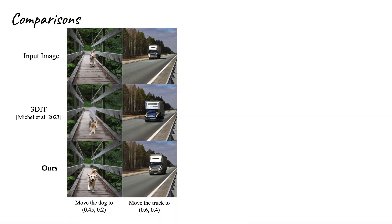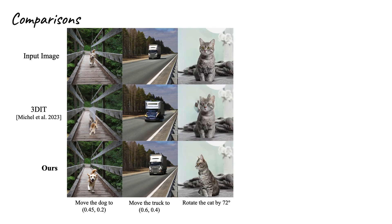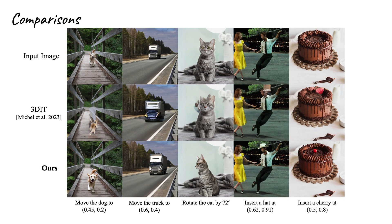We also conduct comparisons with state-of-the-art object editing methods. The top row displays the input image, while the middle row shows results from 3DIT. Our results are presented in the bottom row. Specifically, we instructed 3DIT to move the object to a specific location, or rotating the object, or inserting the object. We show that 3DIT can only deal with limited editing tasks and still falls short in delivering precise control.